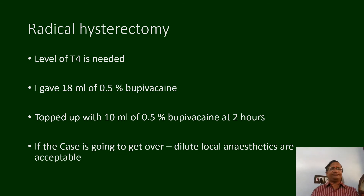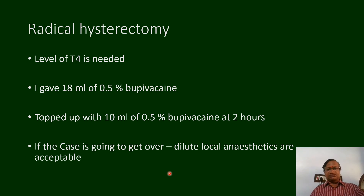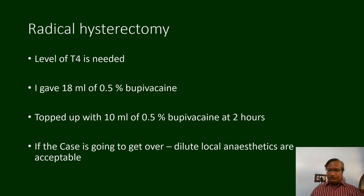For a radical gastrectomy requiring L4 level: give 18 ml of 0.5% bupivacaine, then top up with 10 ml of bupivacaine at two hours — easy, same concentration 0.5%. If the surgery is going to finish at three and a half hours, switch to 10 ml of 0.2% bupivacaine to establish adequate post-operative analgesia.